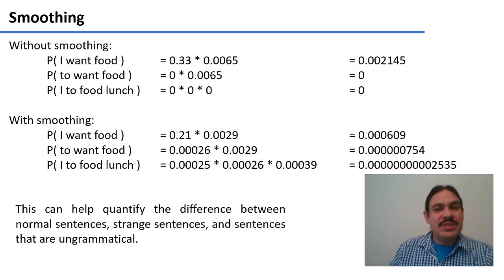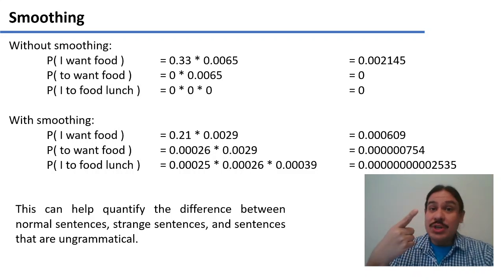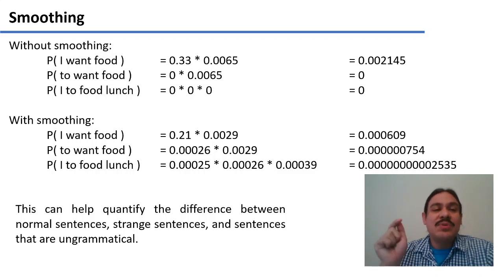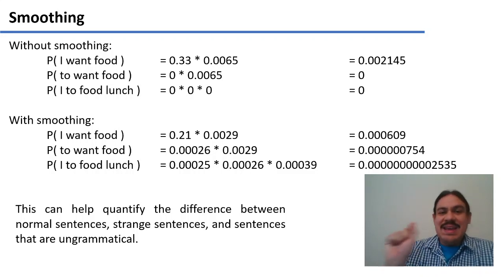Because it would allow us to differentiate between three types of sentences. Sentences that are good and that we do see in the corpus, such as I want food. Sentences that are good but that we don't see in the corpus, such as to want food. And sentences that are ungrammatical in English and that we shouldn't admit in our model, such as I to food lunch. Without smoothing, the probability of the first one is 0.002145, which is fine. But the probability for the second and third one is the same. It's zero.